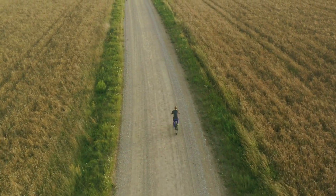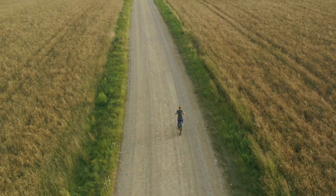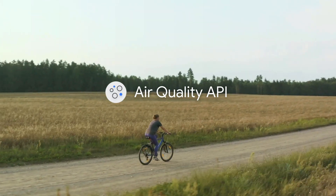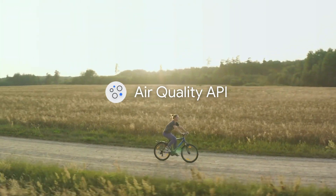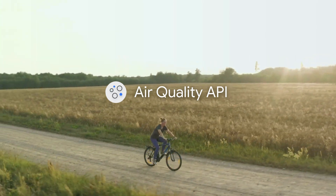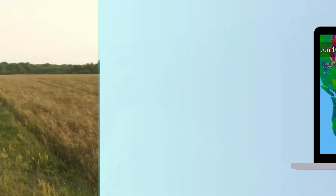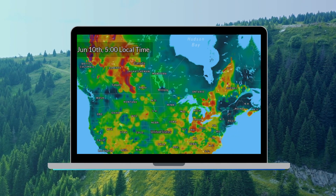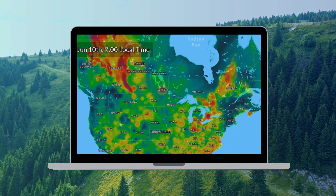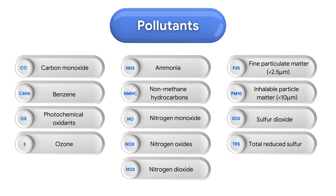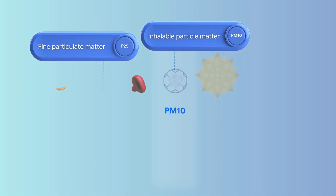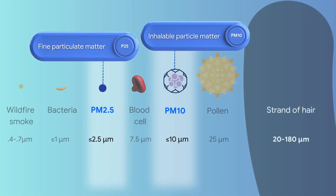Which is why we're excited to announce the general availability of the Air Quality API, which helps individuals, businesses or government organizations access Google's data, expertise and actionable insights in air quality to track and foresee threats stemming from climate change and challenges with air pollution.